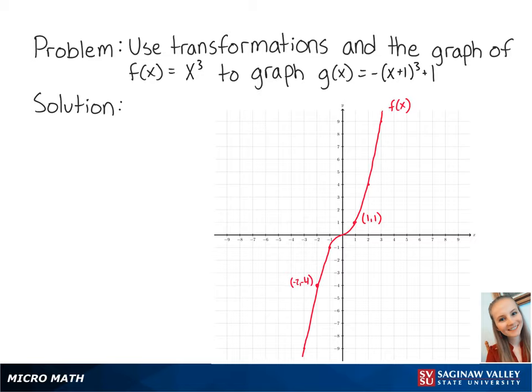For this problem, we want to use transformations and the graph of f(x) = x³ to graph g(x) = -(x+1)³+1. g(x) is equal to -f(x+1)+1.